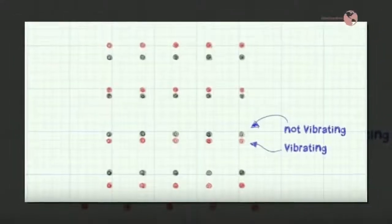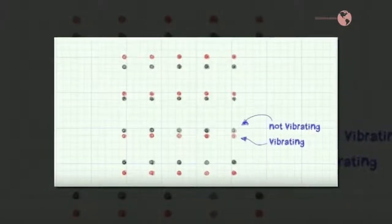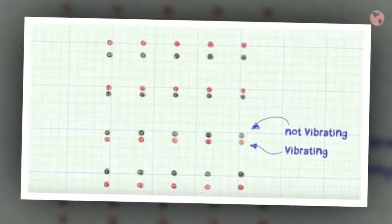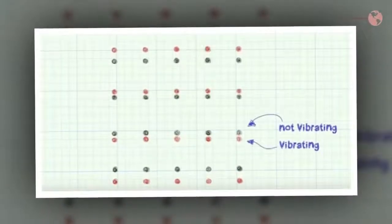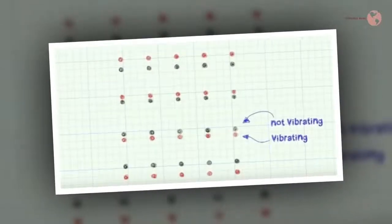Quantum physicist explains how one thing can be in two places at the same time. Erin O'Connell has blurred that distinction and created an object that is visible to the unaided eye, but provably in two places at the same time.